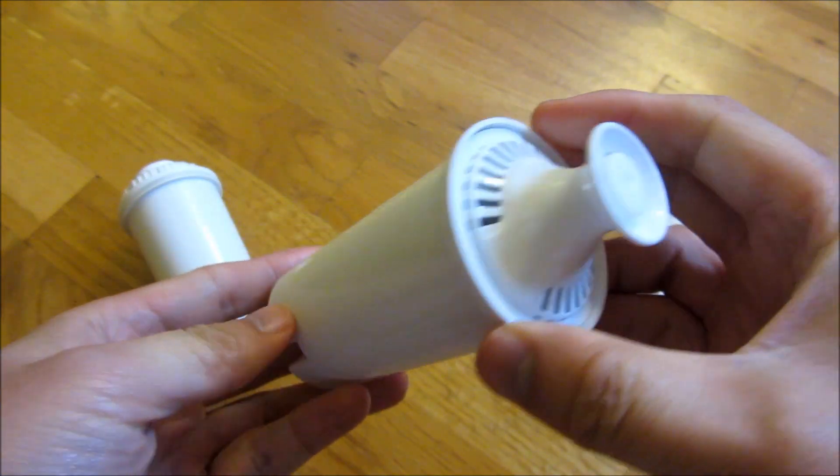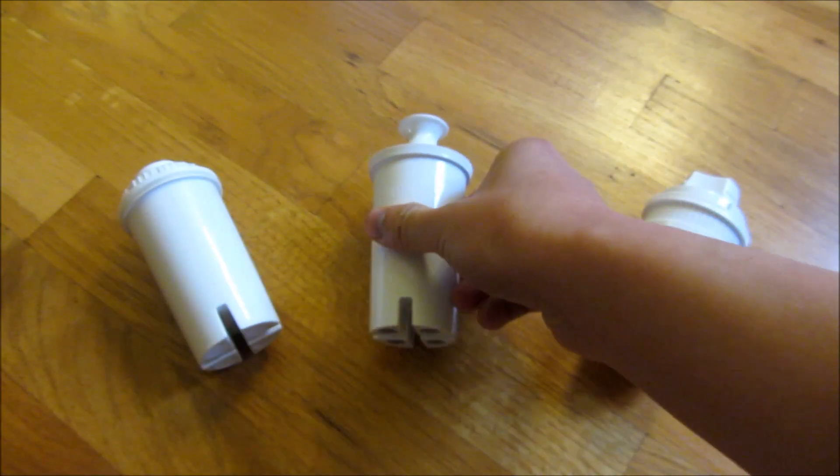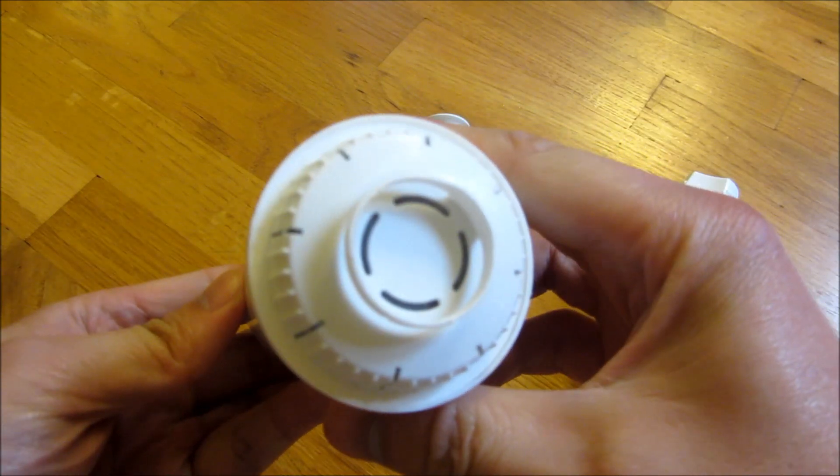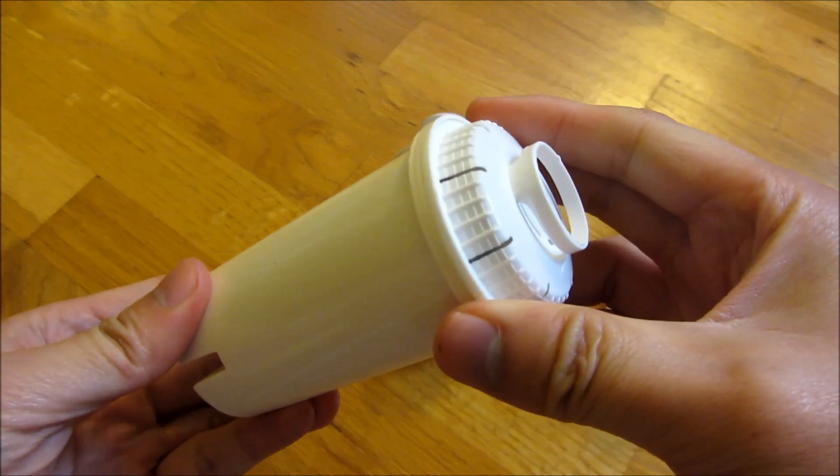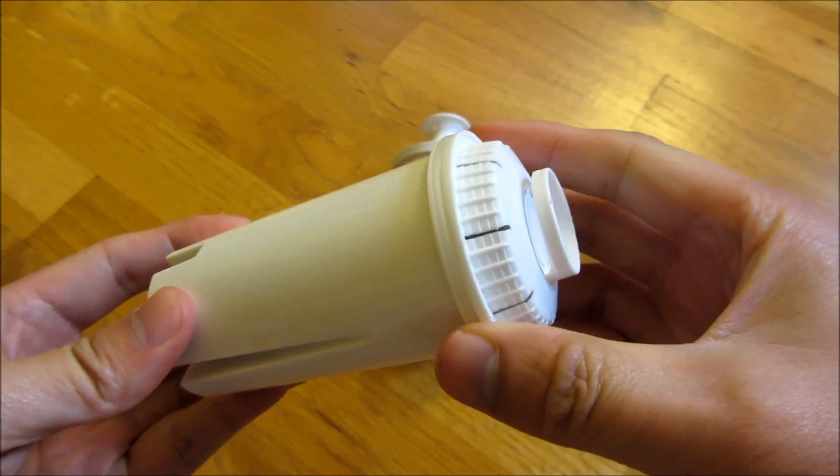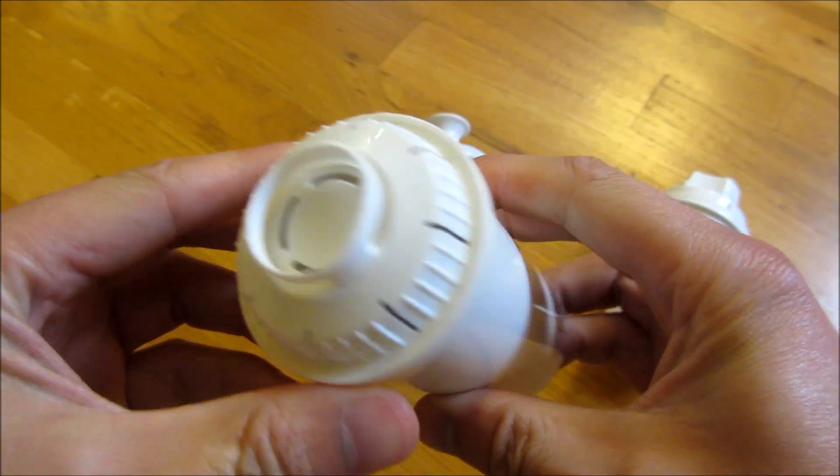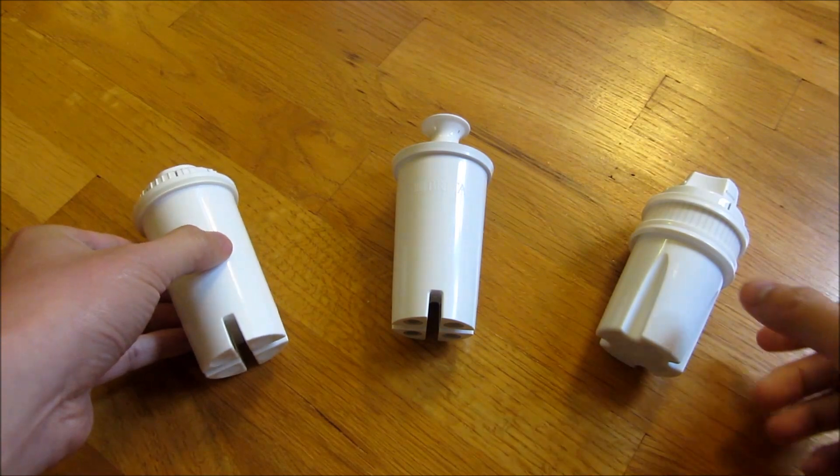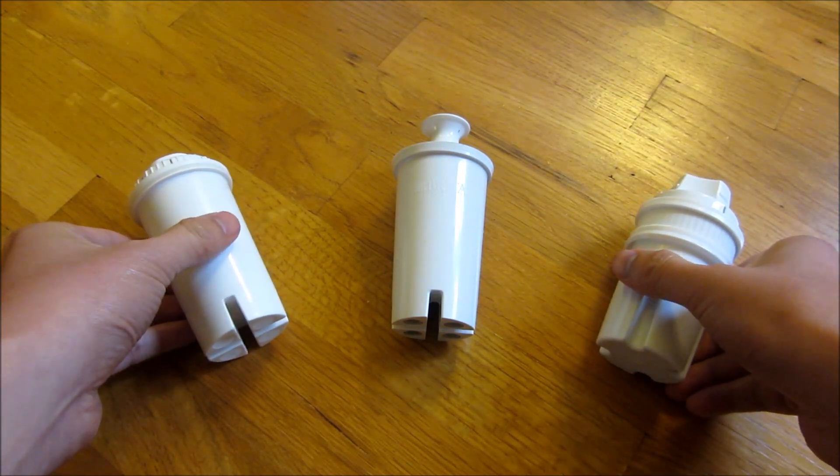So this is an original Brita filter and this here is a Home Depot filter. What I'm gonna do is compare and contrast basically what's inside after I've dissected these and cut out the contents and poured out the contents to show you individually what's inside.